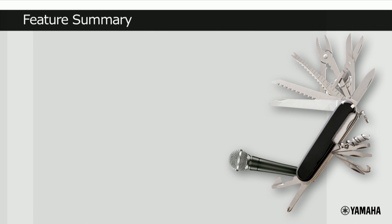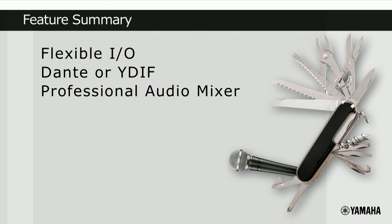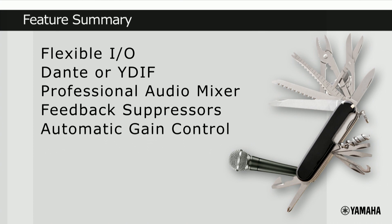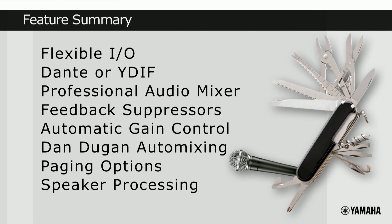To summarize, the MTX processors offer a wide range of inputs and outputs, including Dante and YDIF, which help to reduce installation costs and increase flexibility. The mixing parameters, matrix, and routing of the MTX are very powerful at this price point. Added features include the dual feedback suppressors, the auto-gain control to level out the background music, the Dan Dugan auto-mixing for multi-mic applications, the paging station, plus output and speaker processing. These are very powerful tools that have a range of remote control methods to best suit the customer and application.